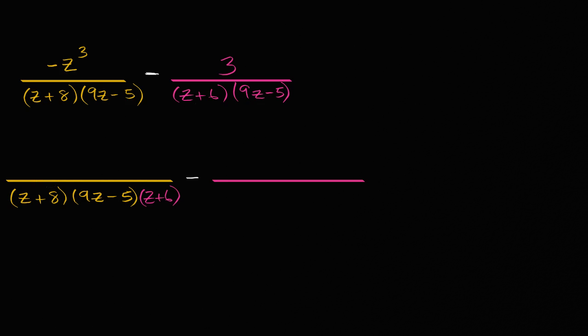All right, so what will the numerator become? Well, we multiplied the denominator times z plus six, so we have to do the same thing to the numerator. It's going to be negative z to the third times z plus six. Now let's focus over here.